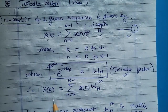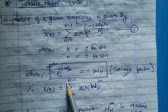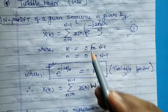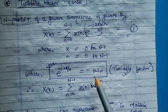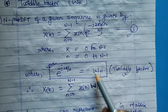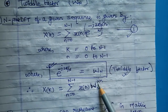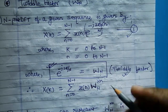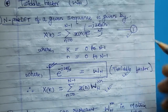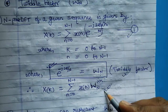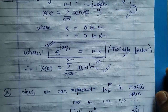We can rewrite the DFT equation in terms of the twiddle factor: X(k) equals summation from n equals 0 to N minus 1 of x(n) multiplied with W_N raised to k·n. So we can rewrite equation number 1 in terms of the twiddle factor notation.